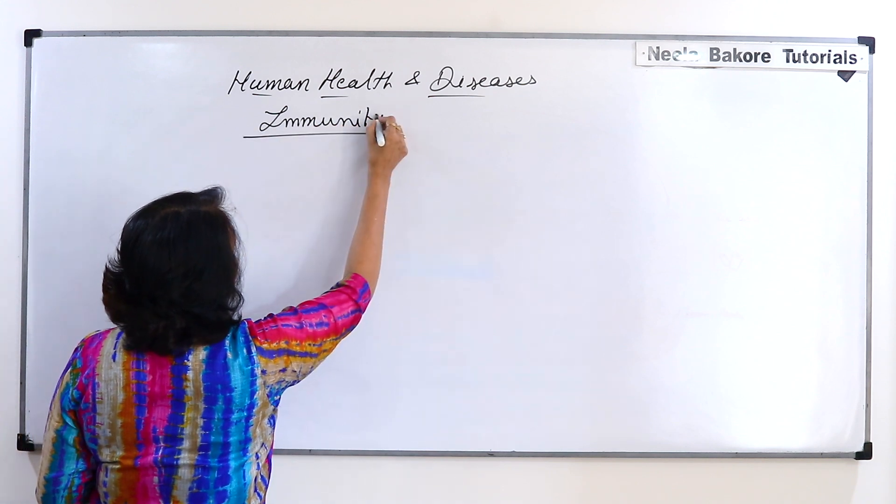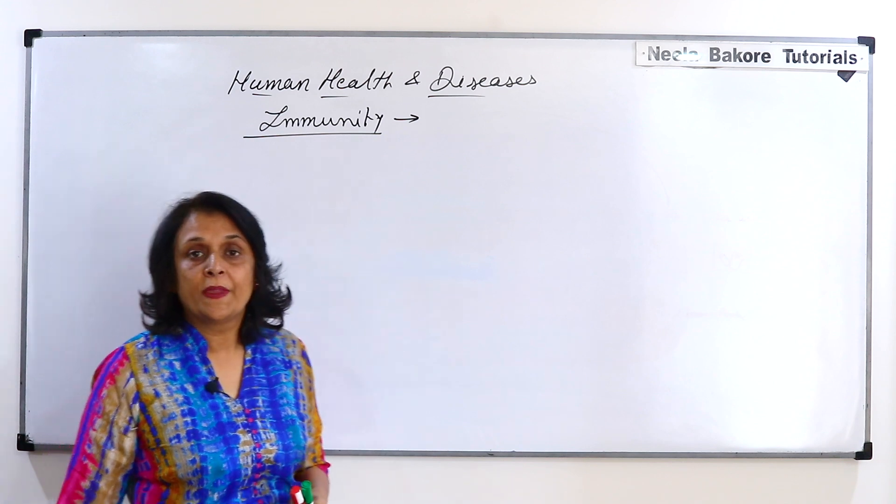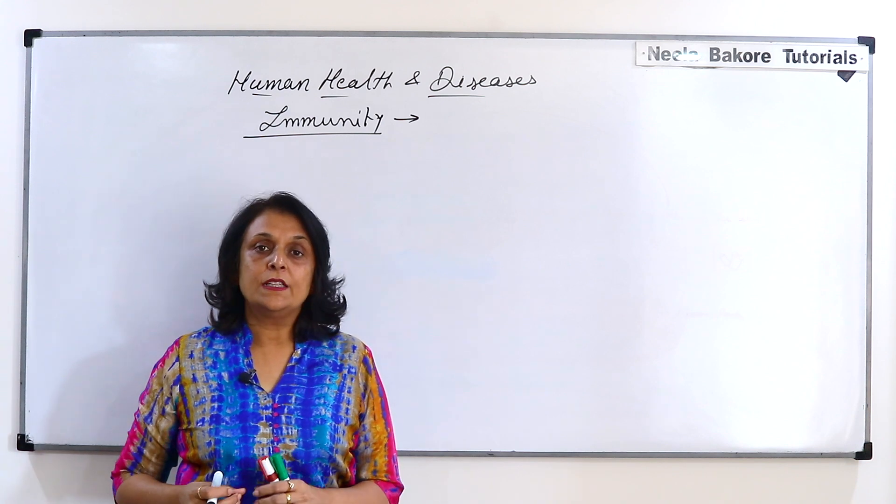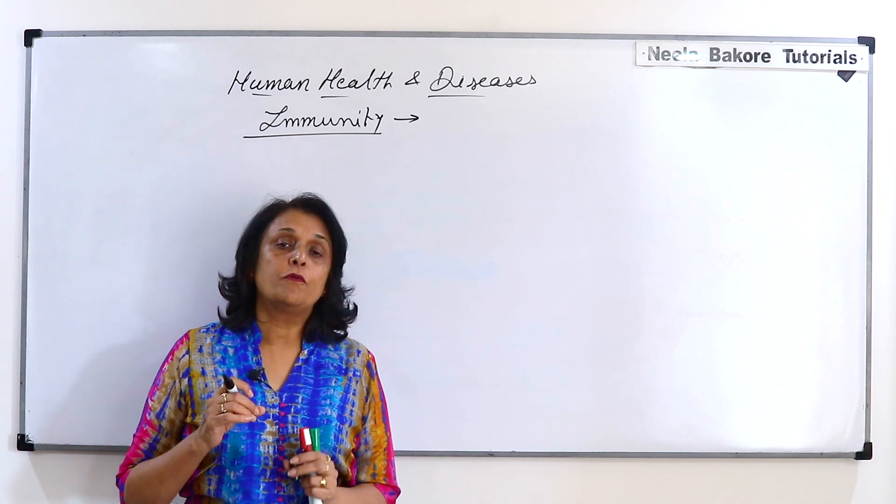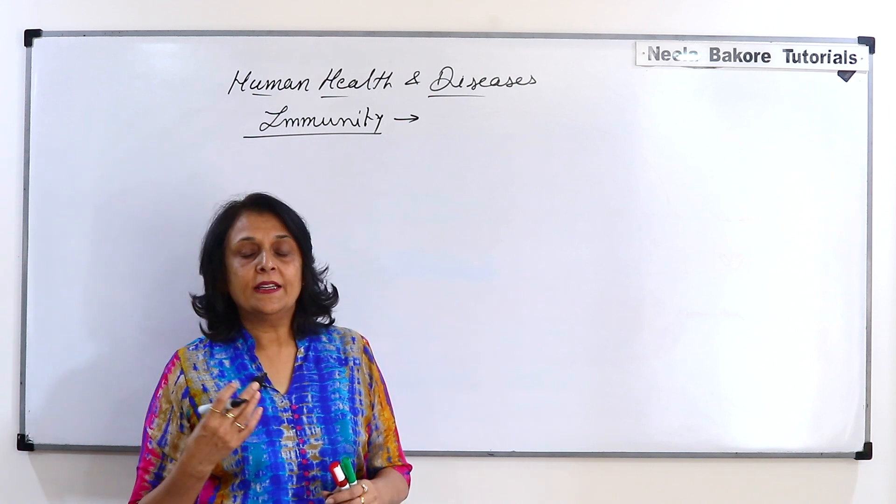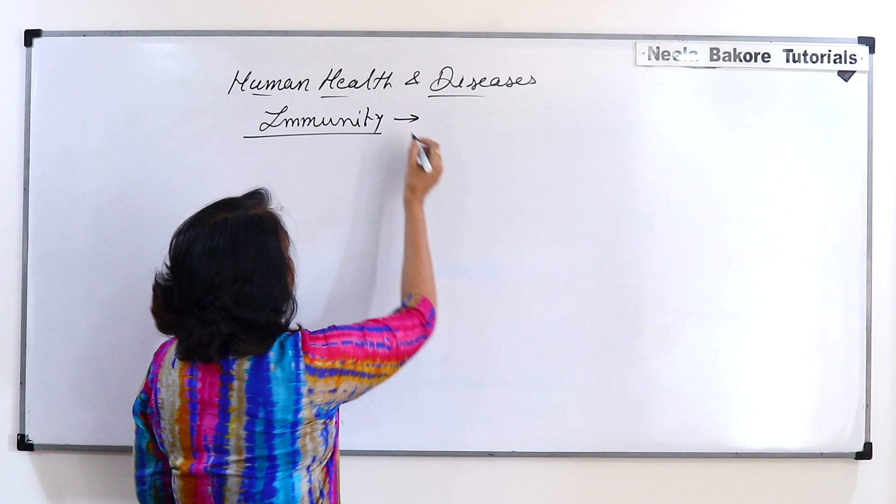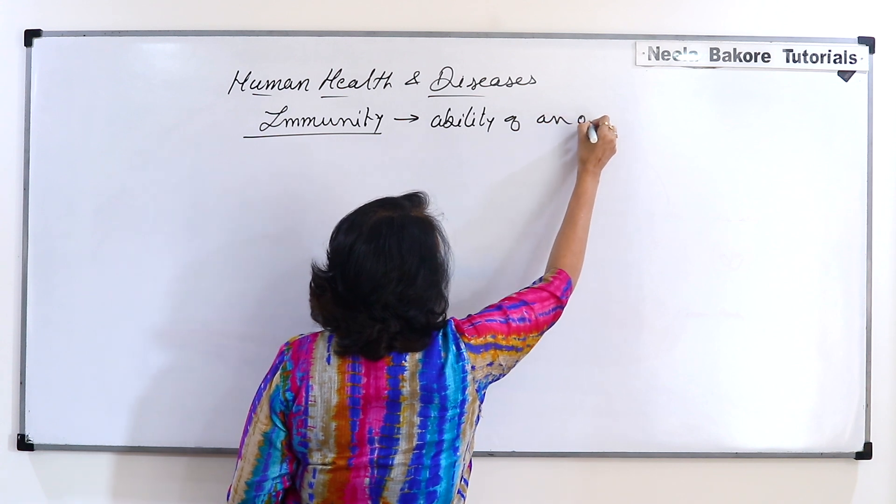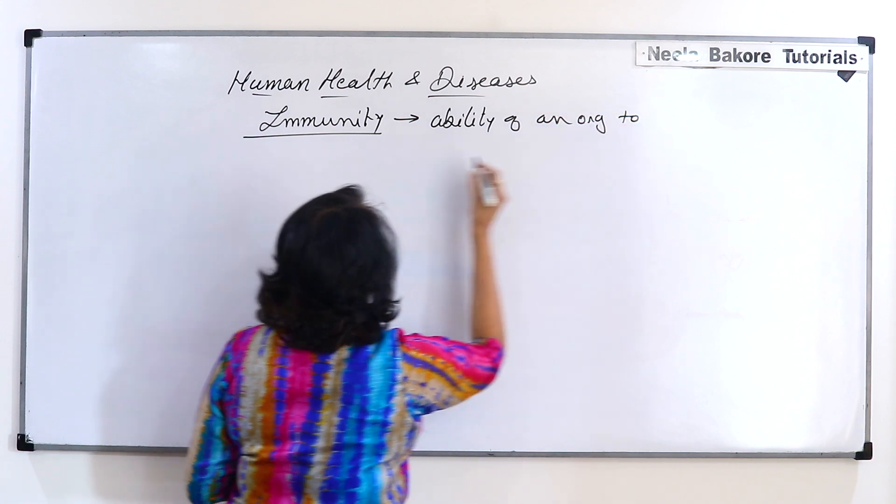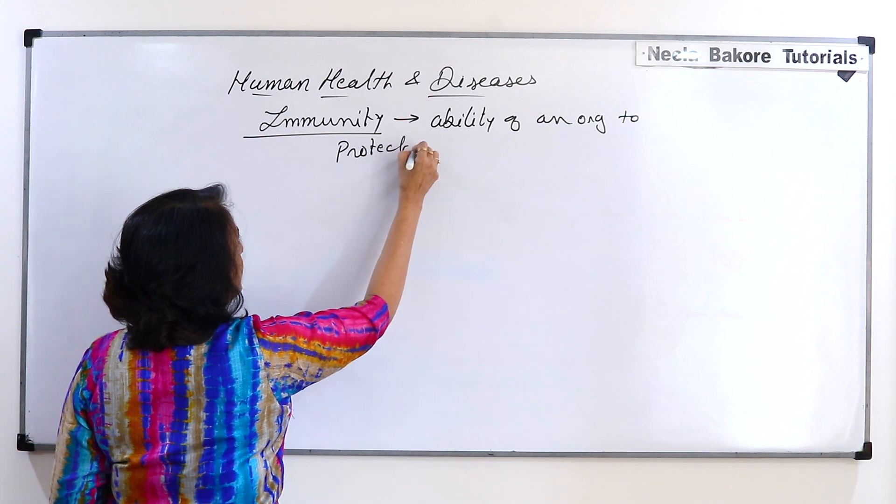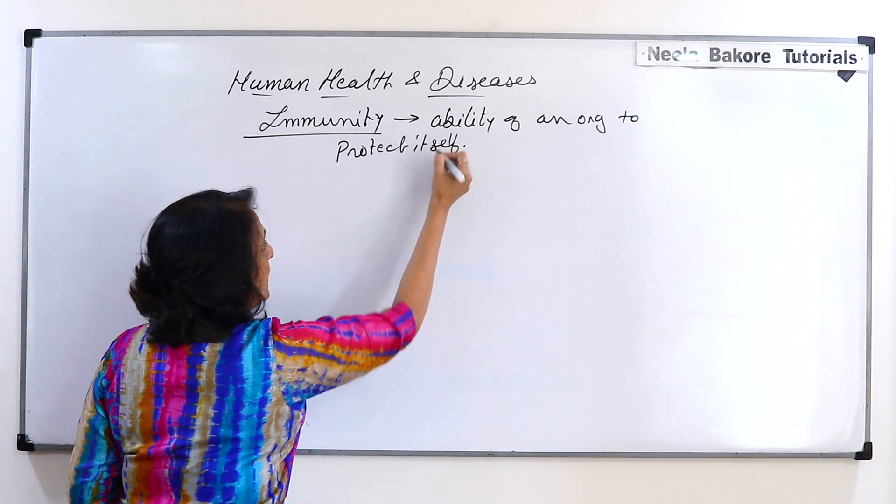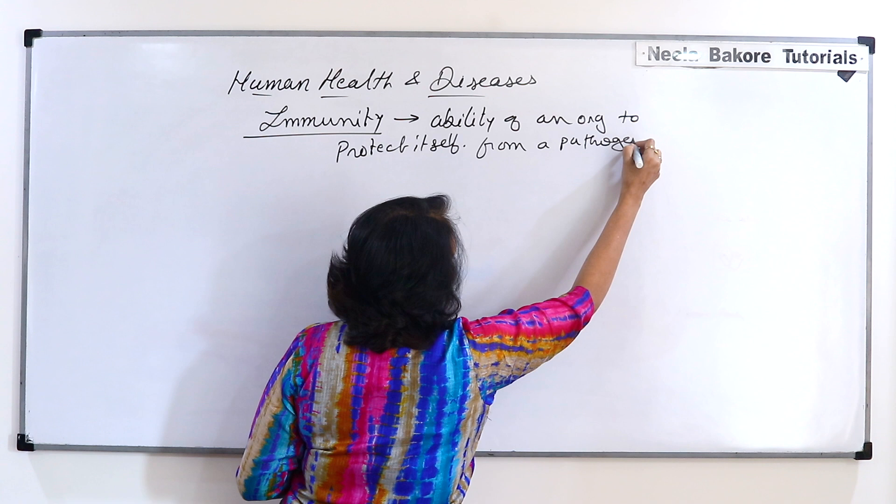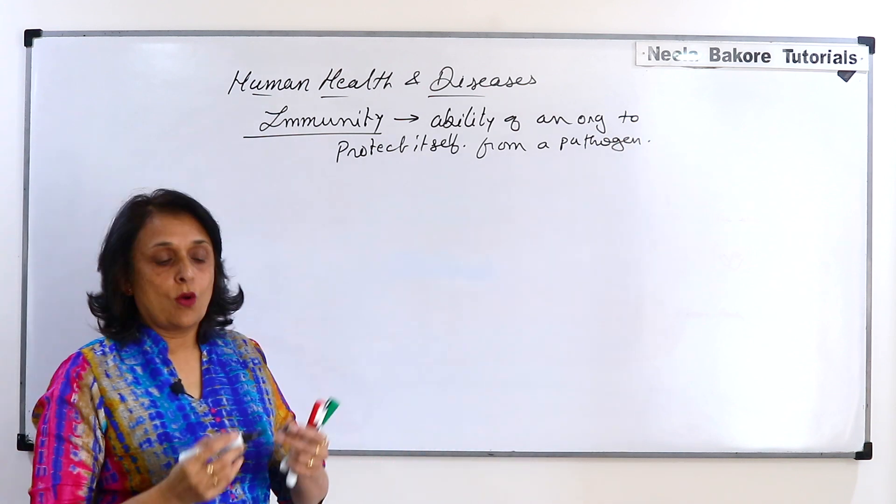So what is this immunity and then we will come to the types. Immunity is the ability of the body of an organism to defend itself from the pathogens, the disease-causing organisms.